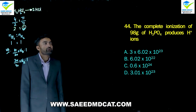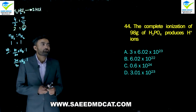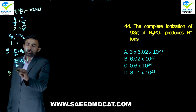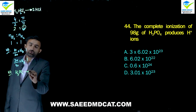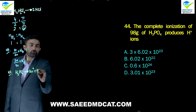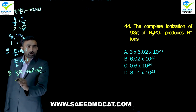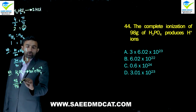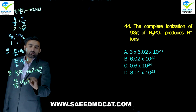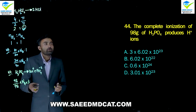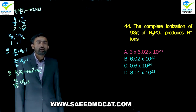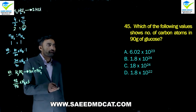Question 44: Complete ionization of 98 g of phosphoric acid (H3PO4) produces how many hydrogen ions? H3PO4 → 3H⁺ + PO4³⁻. Moles H3PO4 = 98/98 = 1. H⁺ ions = 1 × NA × 3 = 3NA. Alpha option (3NA) is correct.